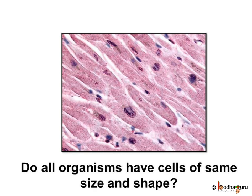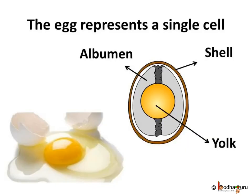Do all organisms have cells of the same size and shape? No — surprisingly, the egg of a hen represents a single cell and it is big enough to be seen by the unaided eye. The white material surrounding the yellow part in the egg is albumin, which solidifies on boiling, while the yellow part is called the yolk. The yolk is the actual part of the single cell, and this single cell can be observed without any magnifying device.